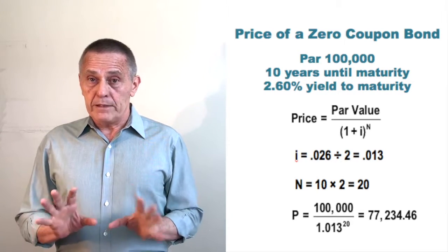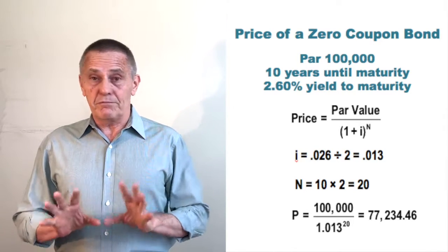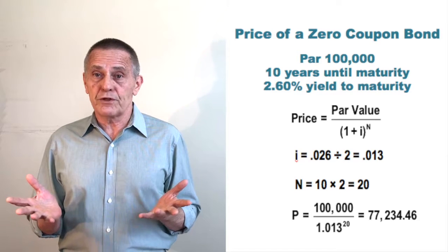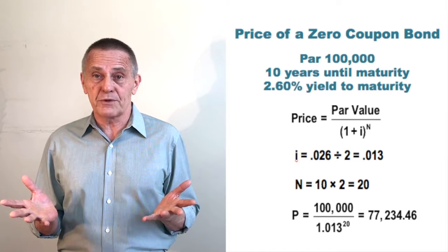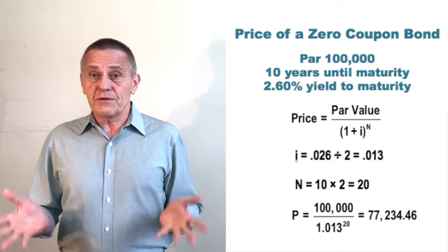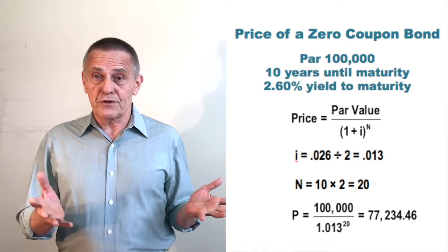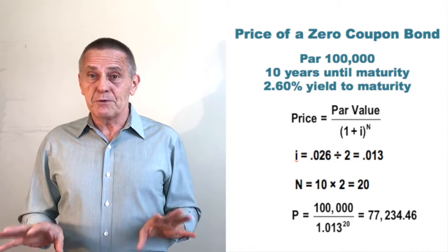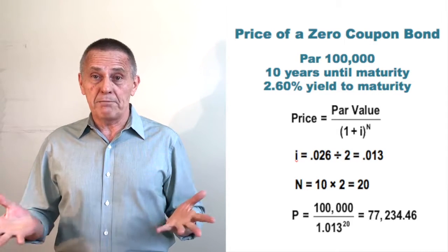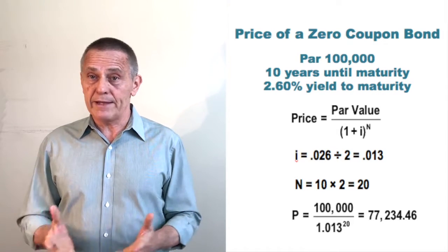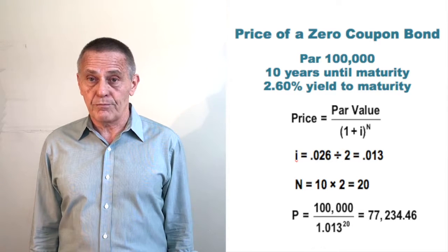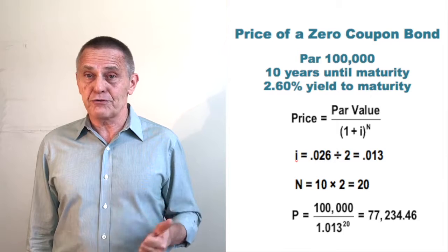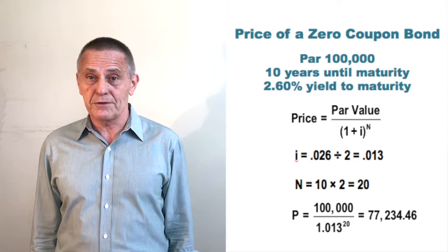Many mistakenly believe that, since there's no coupon and consequently no uncertainty about the rate of return on cash flows received prior to maturity, at least for zero-coupon bonds the rate of return to maturity — if the bond were held that long — must be the yield to maturity at which the strip was trading at the time of purchase. Let's calculate the actual rate of return on that 10-year strip trading at a 2.6% yield to maturity.